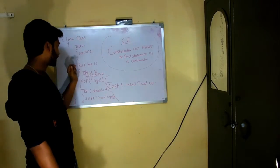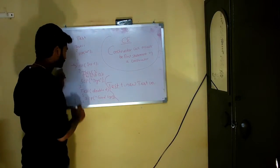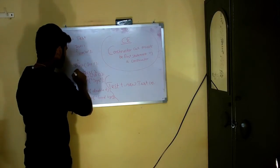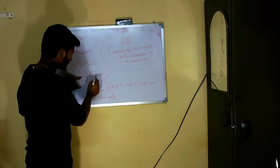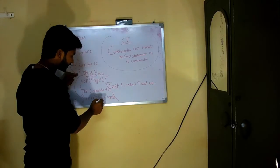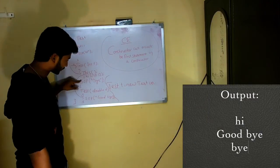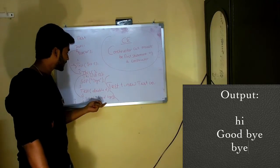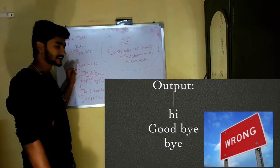I write `new Taste(10)` in main to invoke the int-param constructor. The expected flow would be: int-param calls no-args → prints 'hi', then calls double → prints 'goodbye', then back to int-param → prints 'bye'. So the expected output would be 'hi', 'goodbye', 'bye'. But if you think this will work, there is a bug in the program.